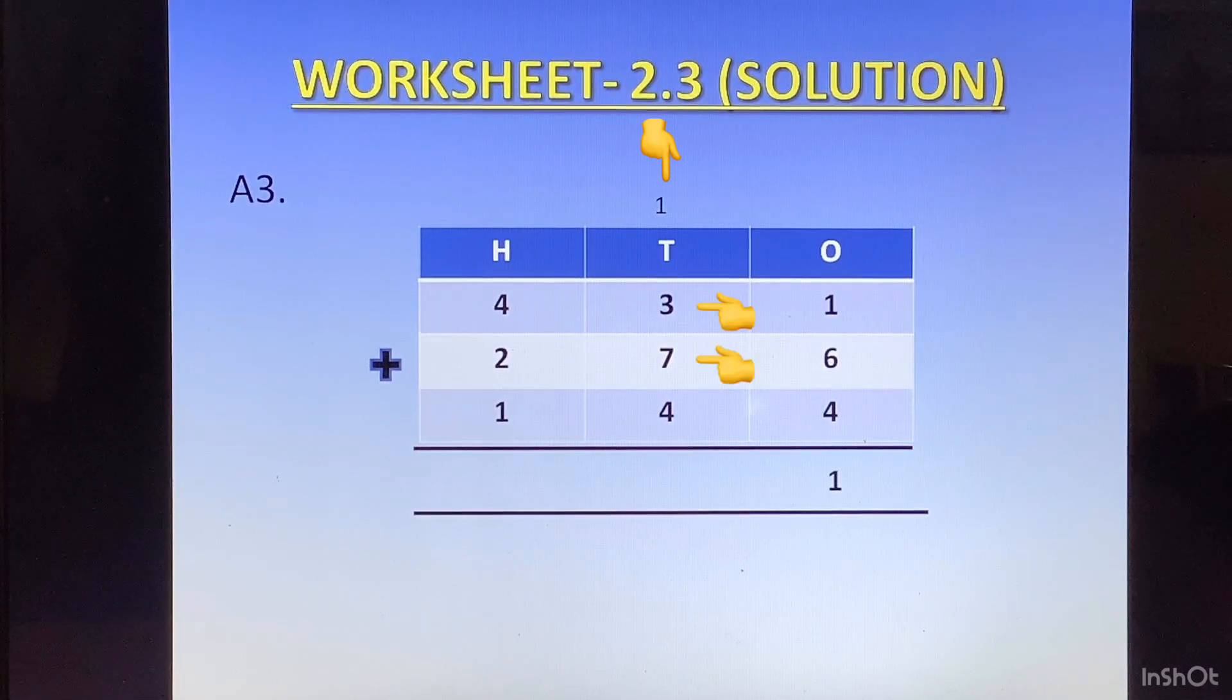In the tens column we have 3 plus 7 is 10, plus 4 is 14, plus 1 of the carry is 15. 1 at the top of hundreds column and 5 at the bottom of tens column. 4 plus 2 is 6, plus 1 is 7, and plus 1 of the carry is 8. So the answer becomes 851.